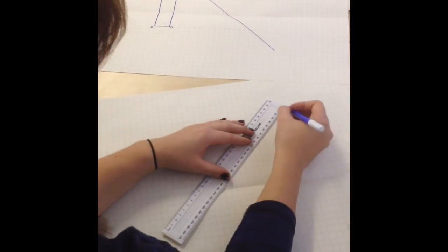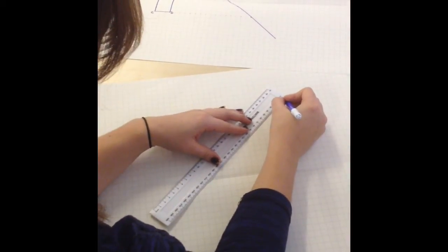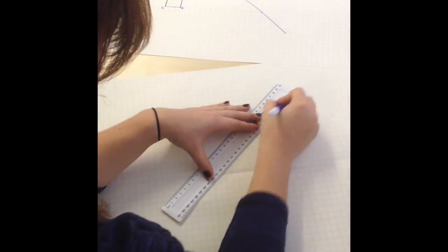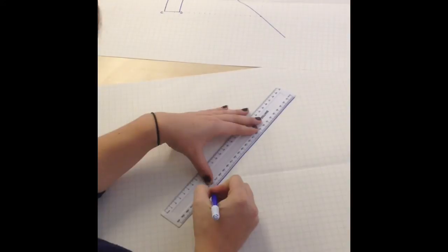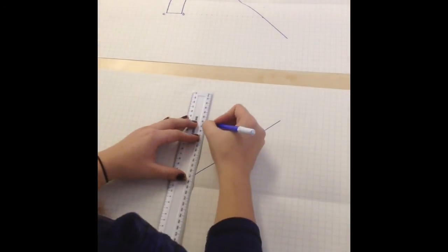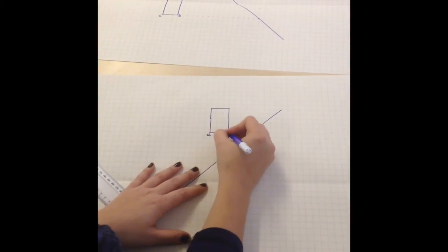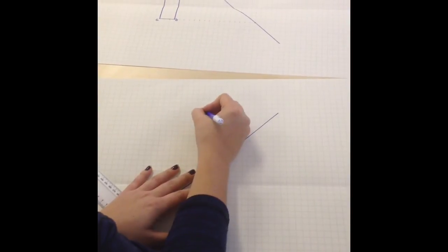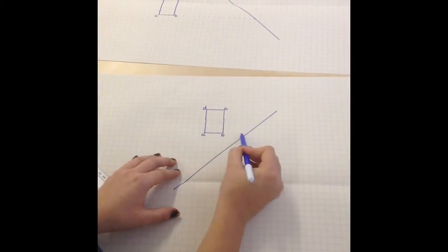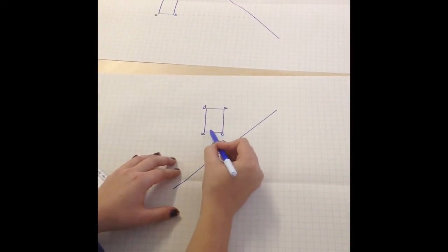Now you can do it with trickier shapes as well and if your mirror line was the opposite way for example like this way and your shape was here and then we'll have A, B, C and D.